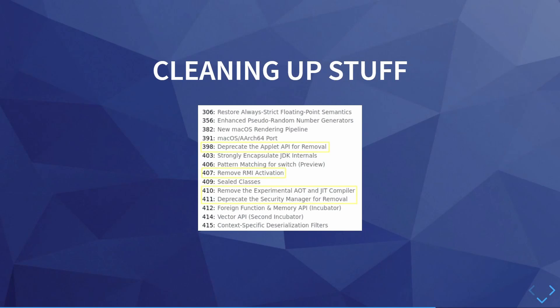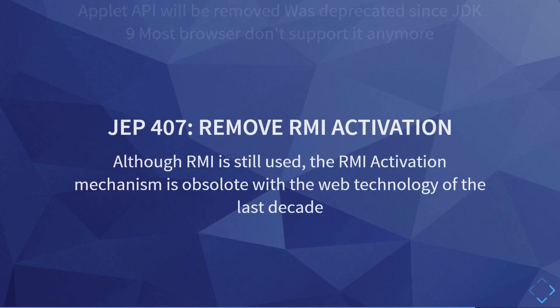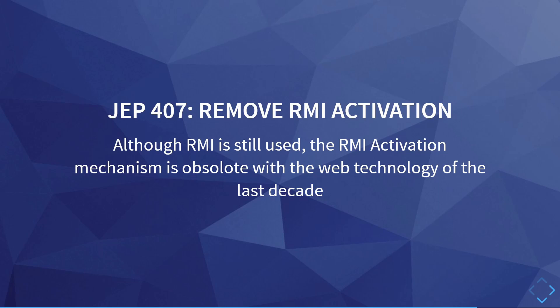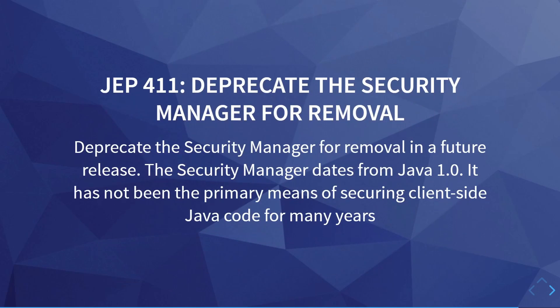The last category is Cleanup. In JEP 398, the Applet API is removed — it had been deprecated for years and most browsers don't even support it anymore. The next JEP removed the RMI activation mechanism; RMI is still used and remains in the JDK, but the activation mechanism is obsolete and is therefore removed. Then there is JEP 410, where they removed the experimental AOT and JIT compiler Graal — it was hardly used from the JDK and most people use GraalVM nowadays. The last JEP is 411, where they deprecated the security manager, which is ancient and hasn't been relevant for a long time.